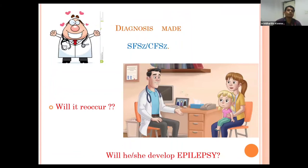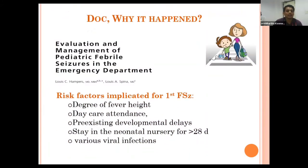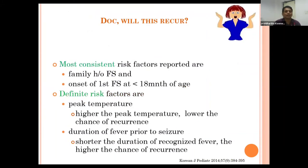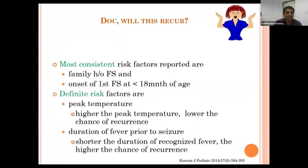A common parental question is whether the seizure will recur and whether the child will develop epilepsy. Risk factors for the first febrile seizure include high degree of fever, daycare attendance, pre-existing developmental delay, stay in neonatal nursery for more than 28 hours, and various viral infections. The most consistent risk factors for recurrence are family history of febrile seizure and onset of first febrile seizure before 18 months of age. Higher peak temperature is associated with lower chance of recurrence, and shorter duration of recognized fever before seizure is associated with higher chance of recurrence.